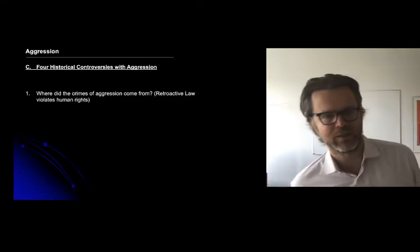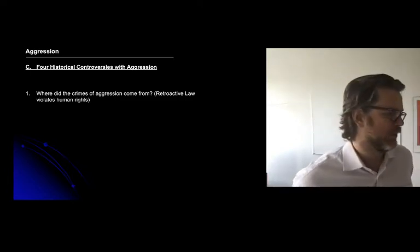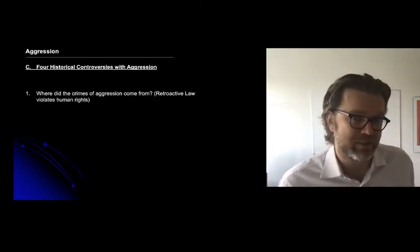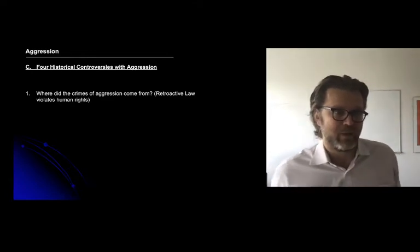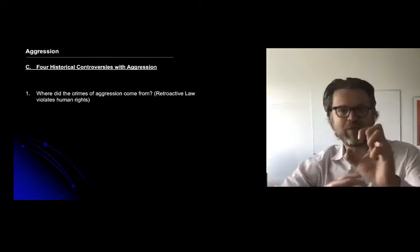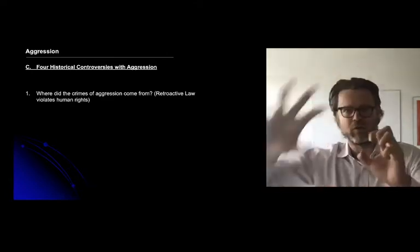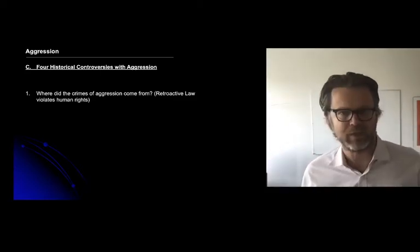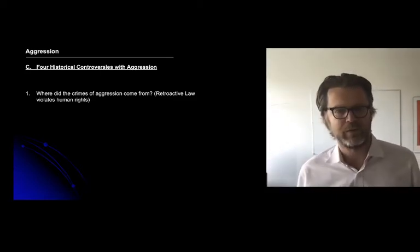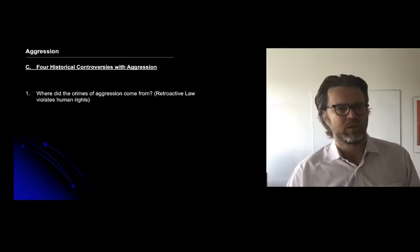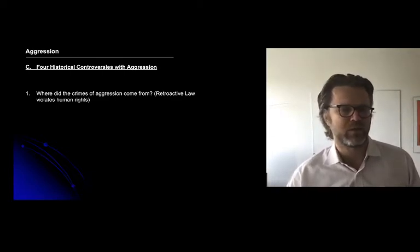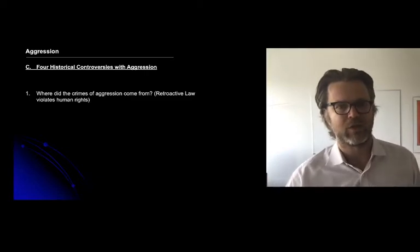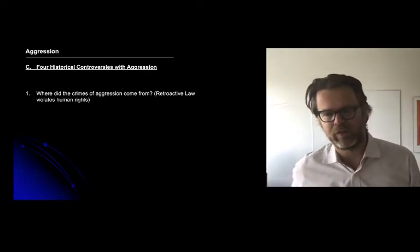The first controversy is that, at Nuremberg, they kind of invented this and erected an entire scaffolding of criminal law around a public international law treaty in ways that were totally unprecedented. So the question of where does this crime of aggression come from is an important initial historical controversy with the offense.